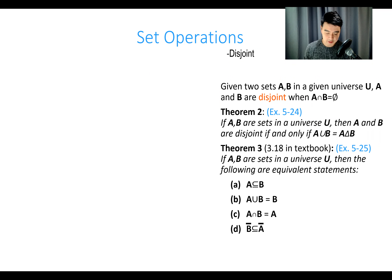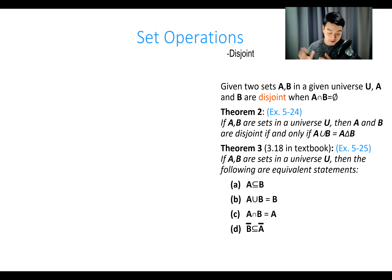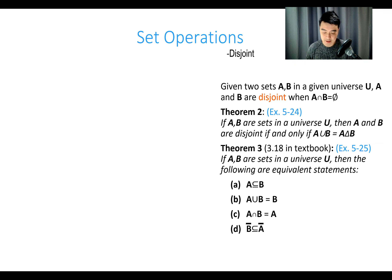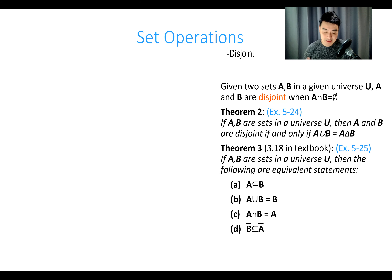I want to continue the set theory section with some definitions beyond set operations. Before the end of the last video, we set up set operations like union, intersection, symmetric difference, and set difference. Now we want to talk about some additional definitions, specifically two theorems. But first, let's define disjointness of two sets.